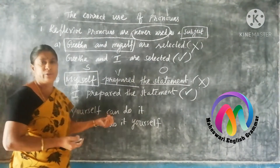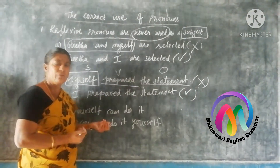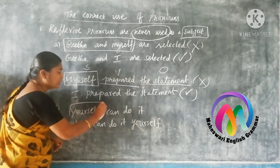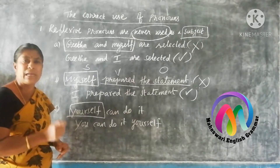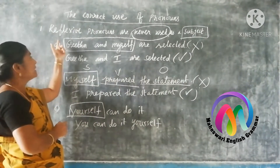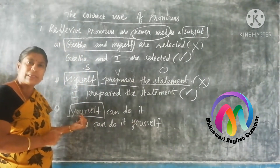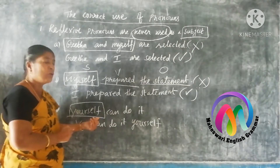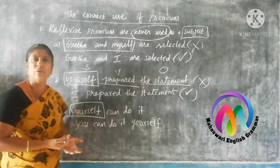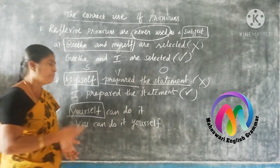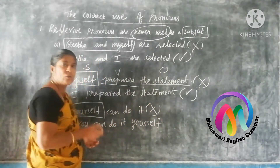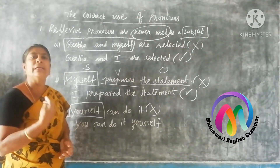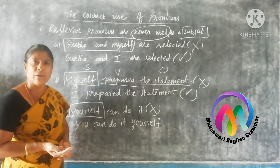Consider: 'Yourself can do it.' This is wrong because the word 'yourself' is in the place of subject and it is a reflective pronoun. Many people say 'yourself can do it' but it is wrong. The reason is the word 'yourself' is a reflective pronoun and it cannot be used in the place of subject.